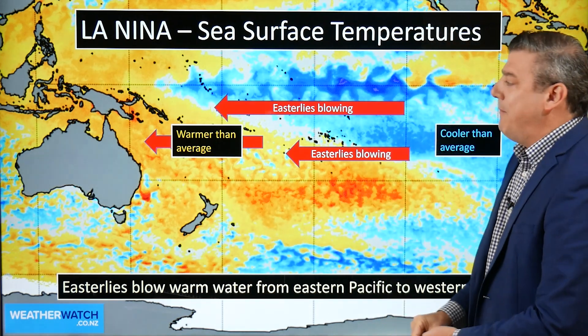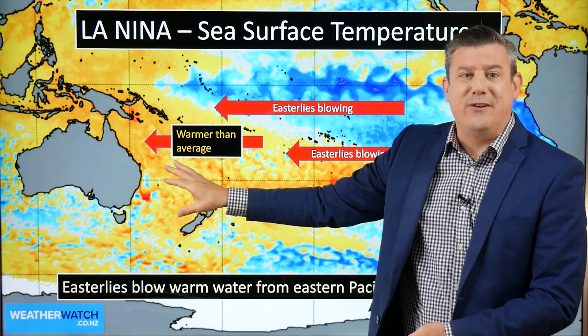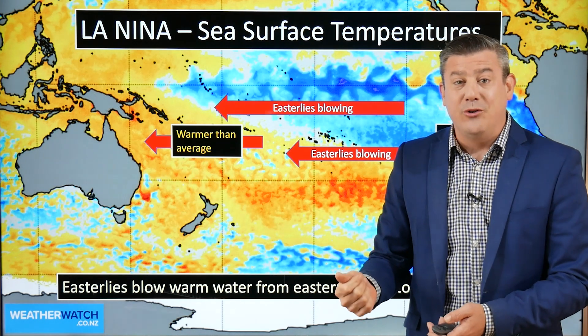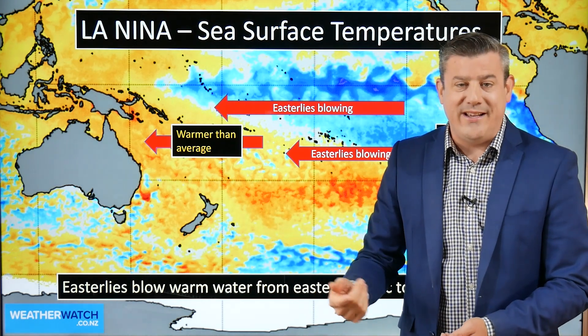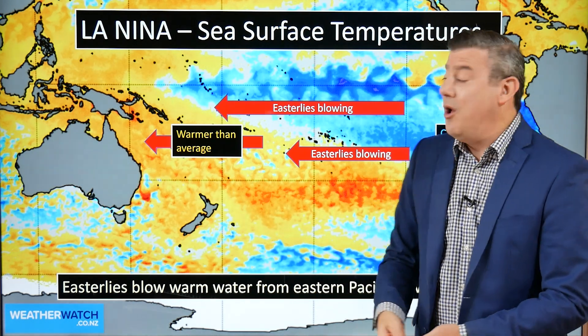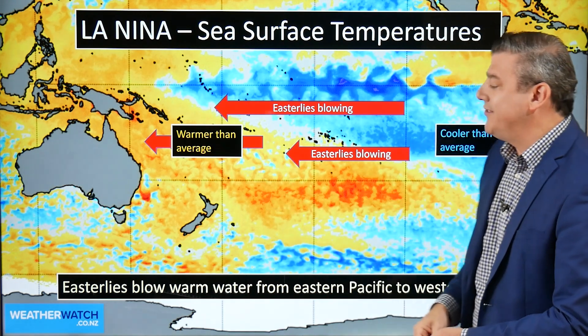So what does that mean? Well, warmer than average sea surface temperatures creates more cloud, more humidity, more low pressure zones, and even more tropical cyclones on this side.